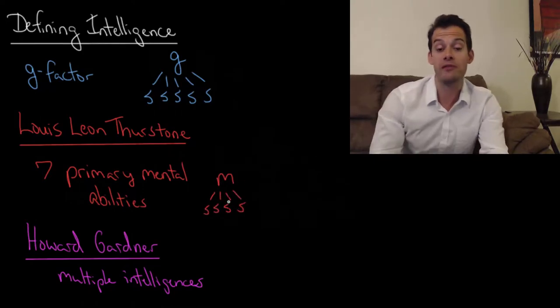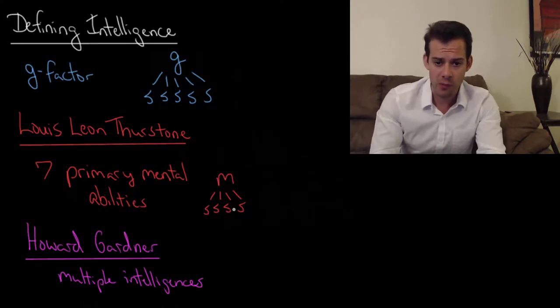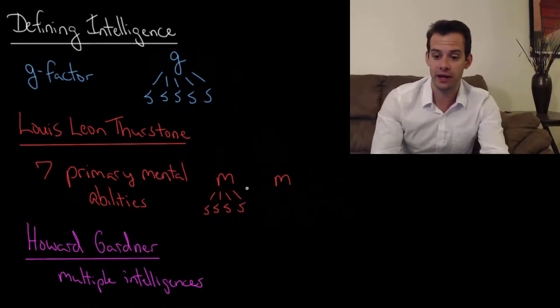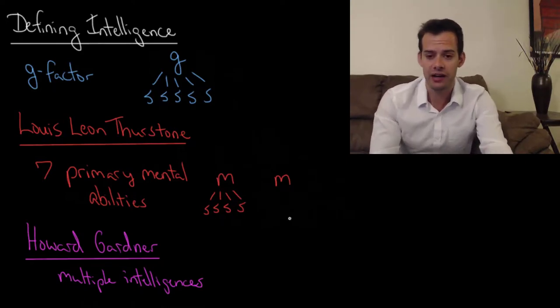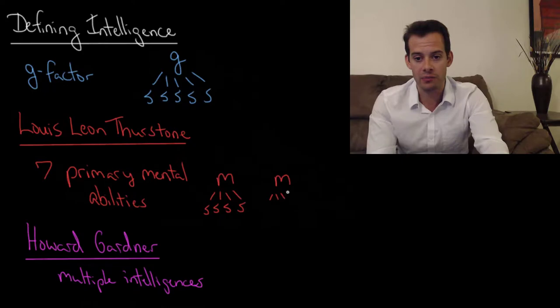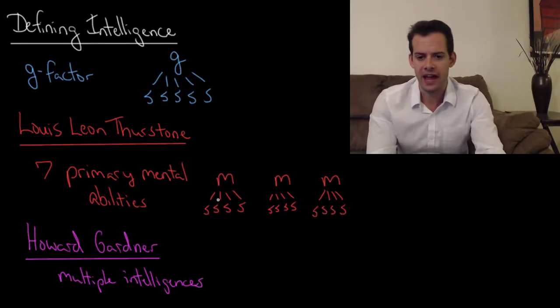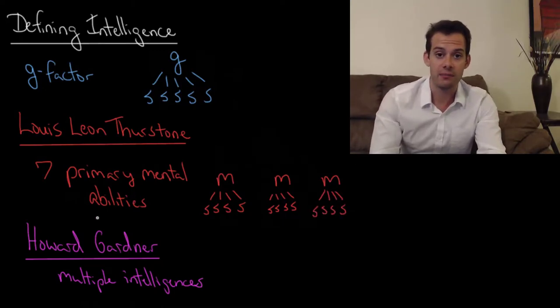Let's say you have your number facility. You have a group of skills related to your number facility, and then you have some other separate mental ability like verbal comprehension that's going to influence other particular skills. Then you have something like reasoning, and the idea is that these are separate mental abilities.